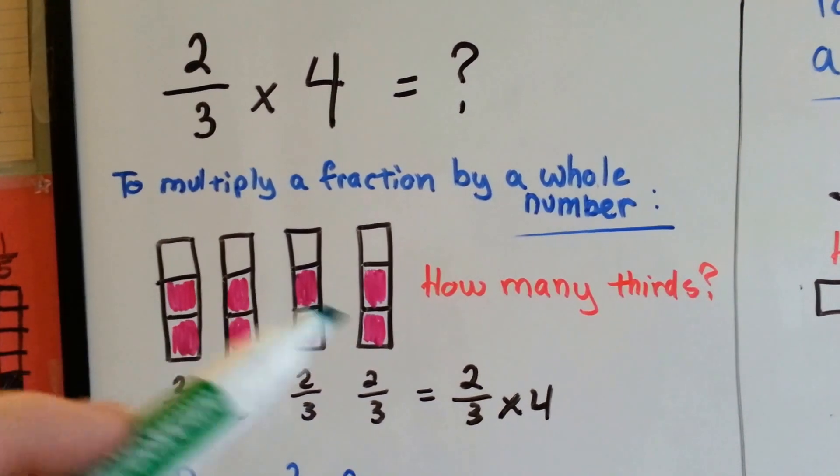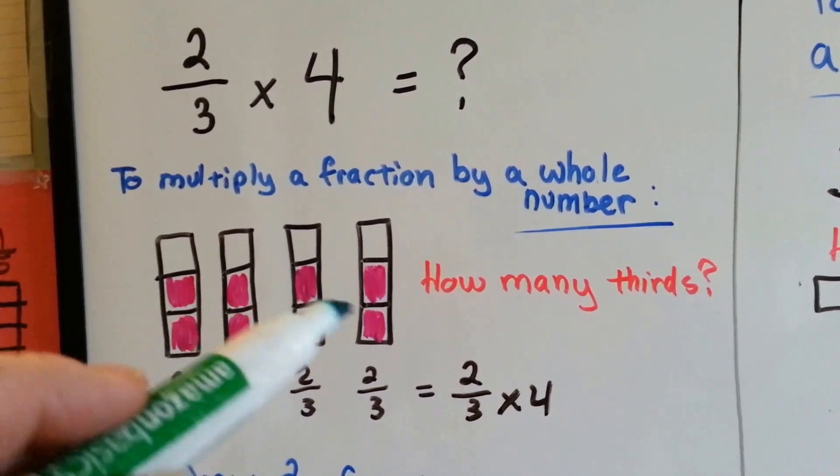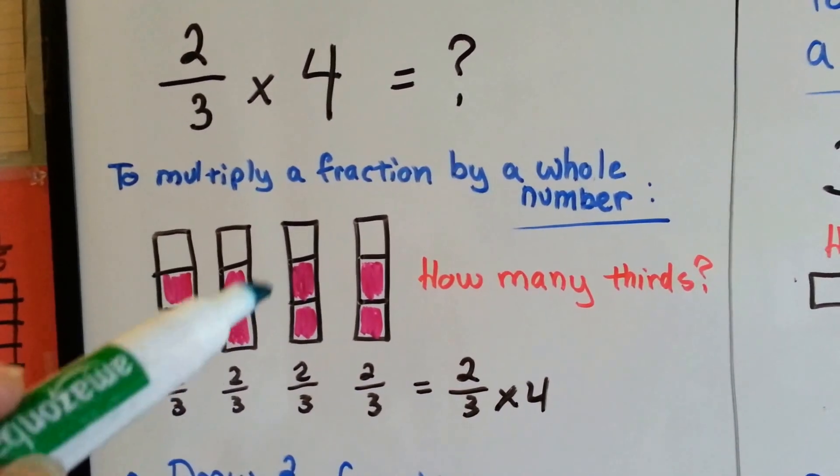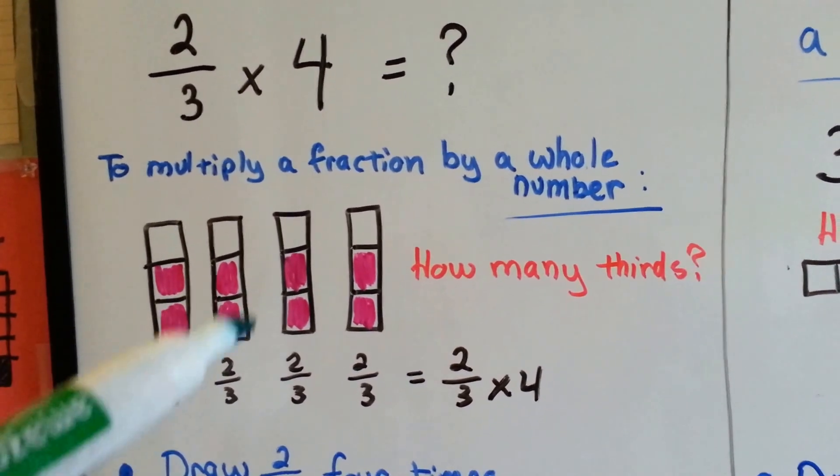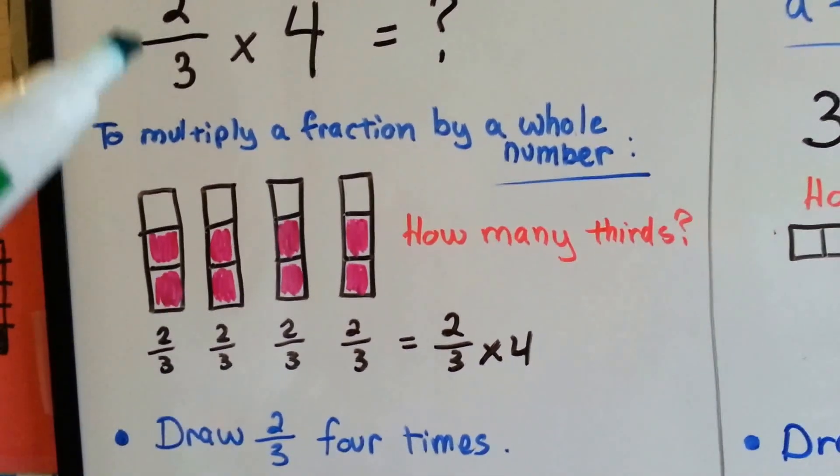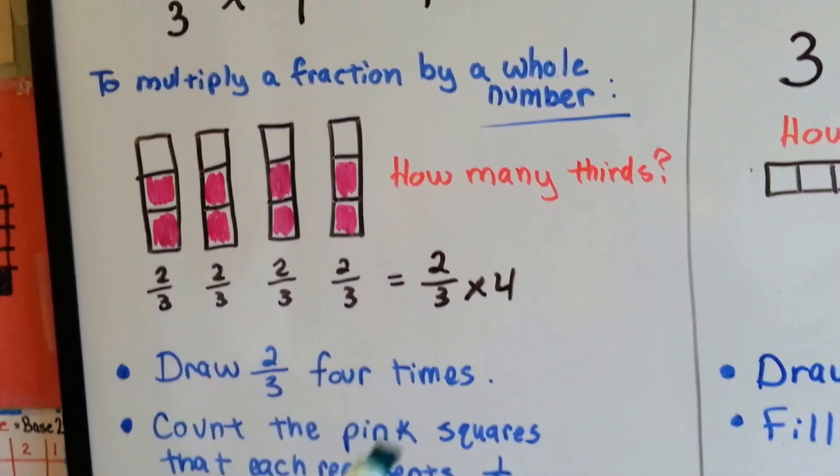We would draw four boxes and fill in two-thirds of them, and then count the thirds: one, two, three, four, five, six, seven, eight-thirds. So two-thirds times four is eight-thirds.